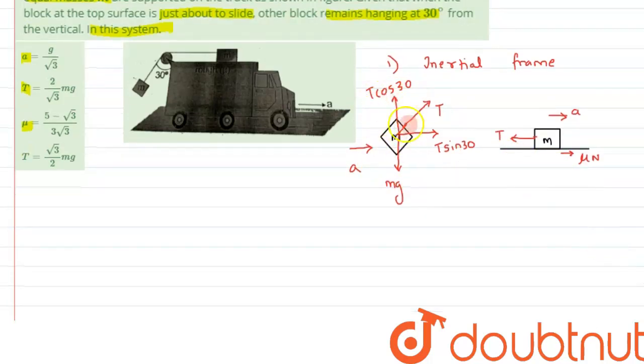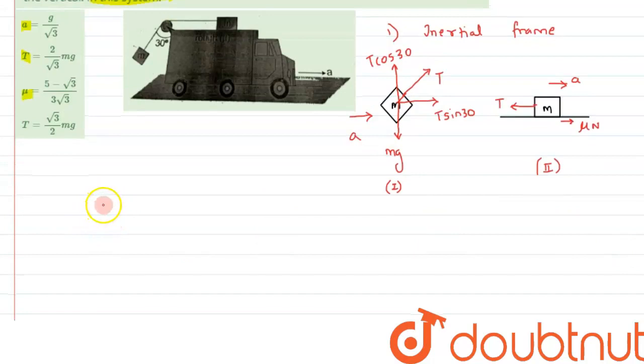So now, what we can do over here is, first we will take this component or this block and try to get the values. So we can write, let's say this is our figure 1 and this is our figure 2. So considering figure 1, we can say, let's take it over here.